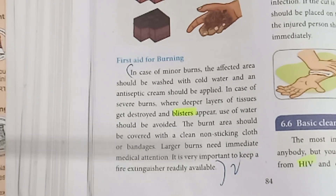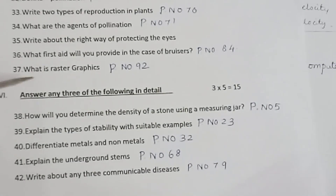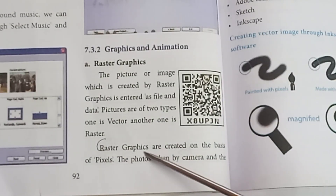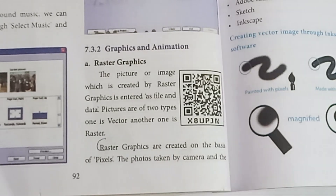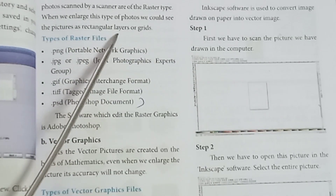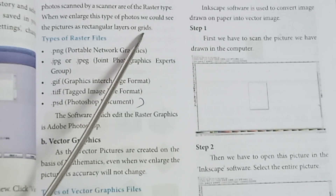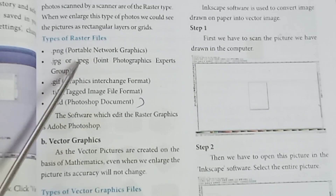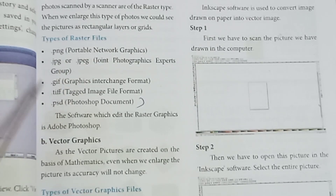Question 36: What first aid will you provide in case of burns? Refer to page number 84. In case of minor burns, use readily available remedies. Question 37: What is raster graphics? Refer to page numbers 92-93. Raster graphics are images organized in layers and grids of pixels (voters). Types of raster files: PNG, JPG, GIF, TIF, PSD.